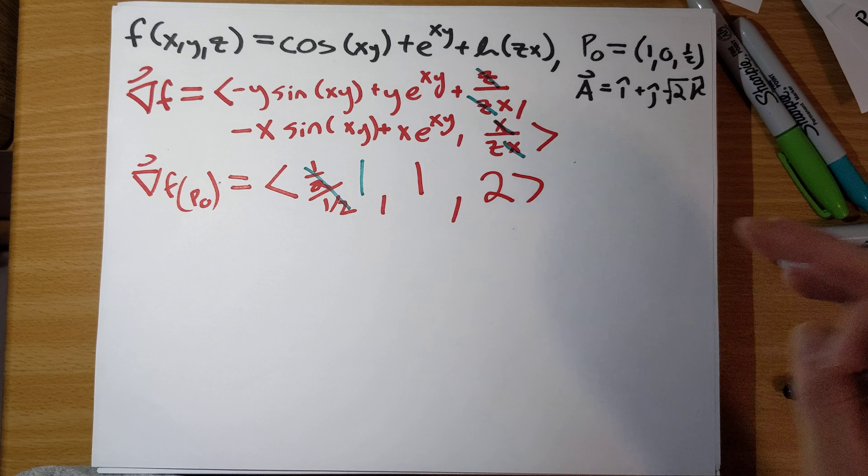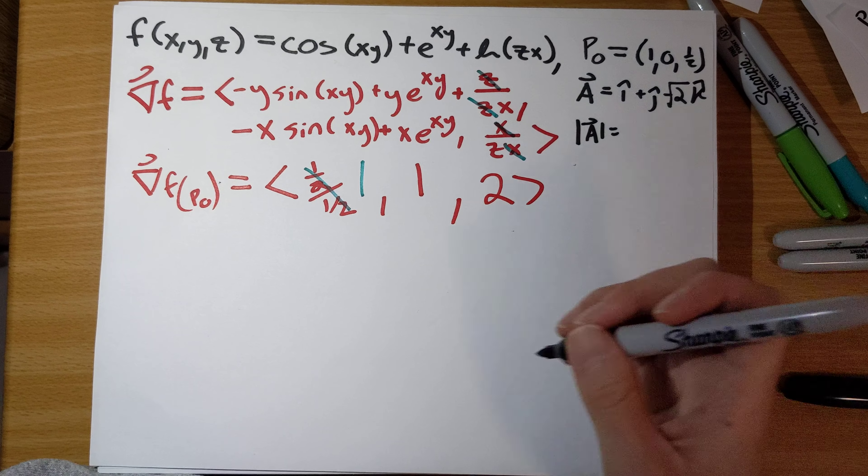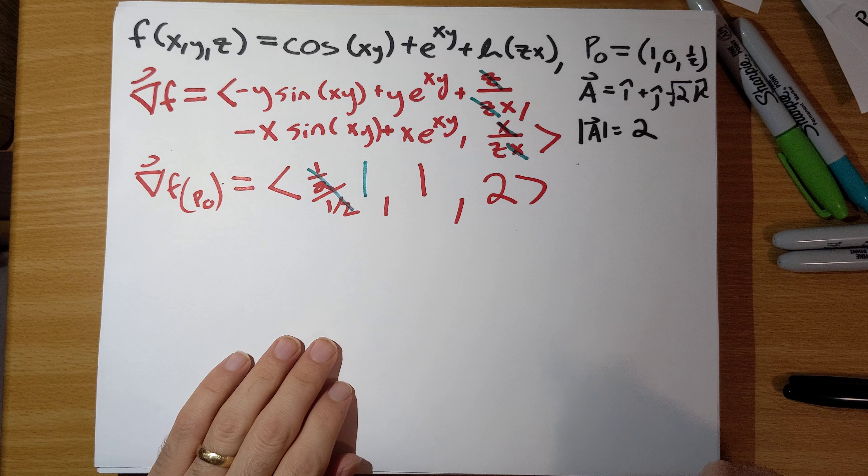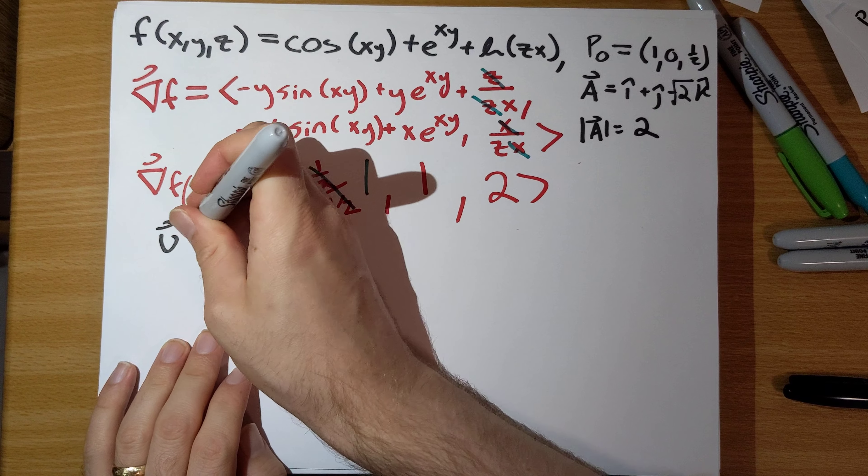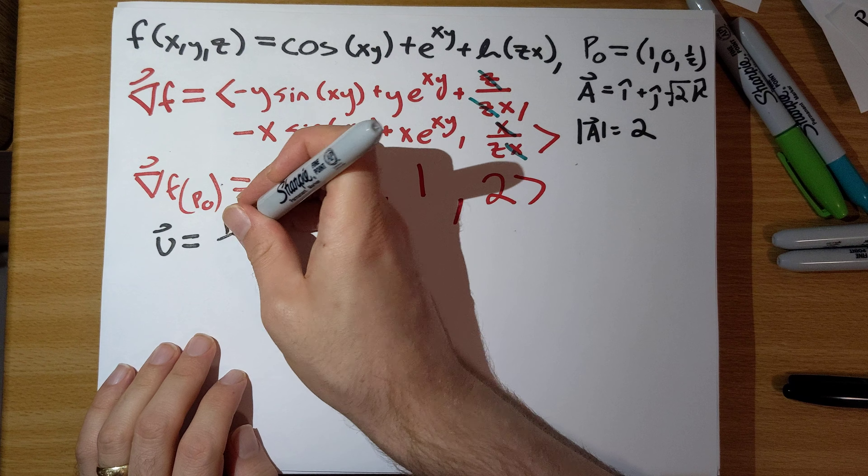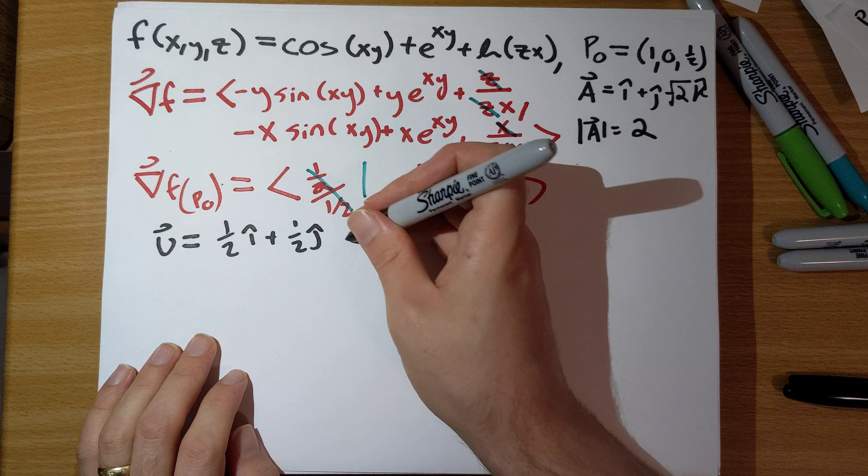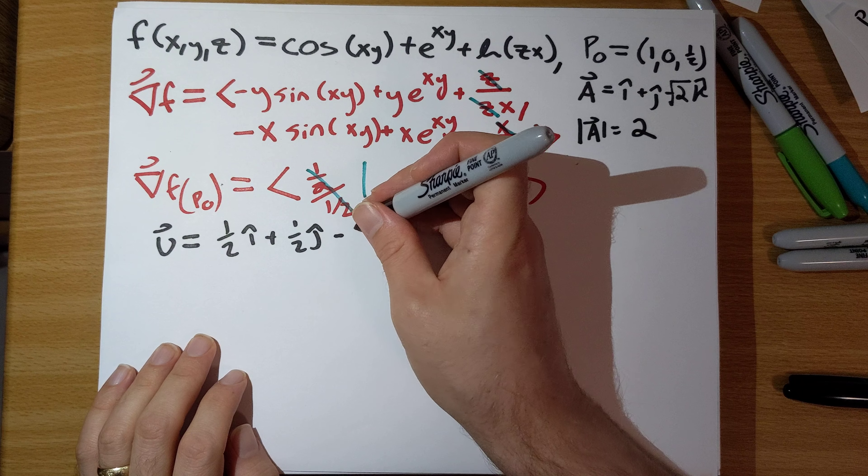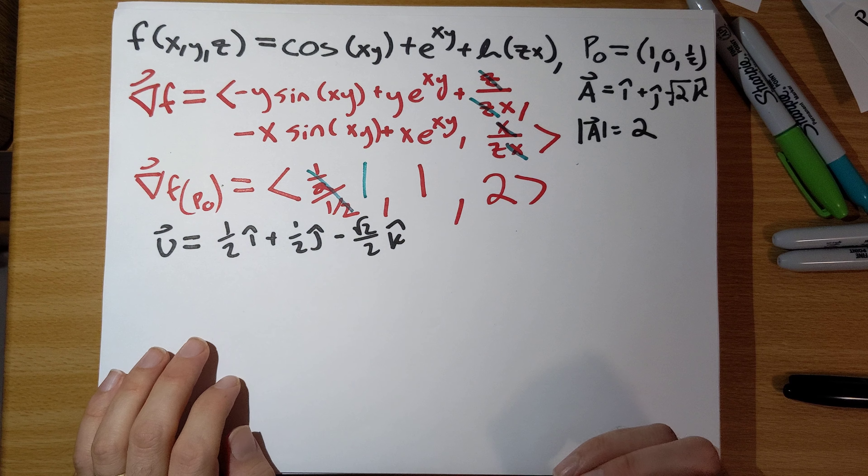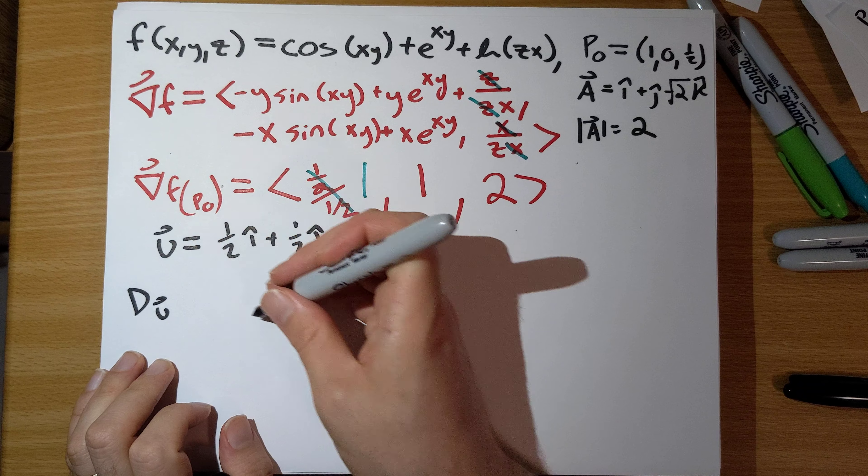Now we need direction vectors, so we're being asked for a is i hat plus j hat minus 2k hat here. The magnitude of a is going to be 2, check that for yourself. And so our direction vector u, divide everything here by 2, so that would be 1 half i hat plus 1 half j hat minus root 2 over 2k hat.